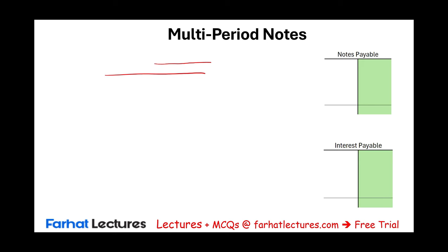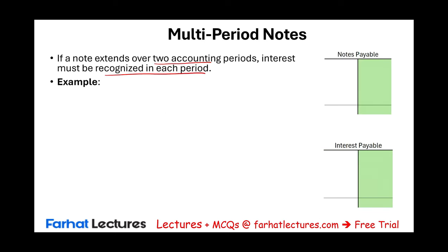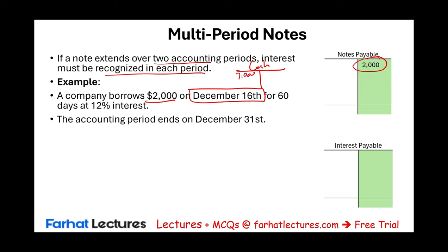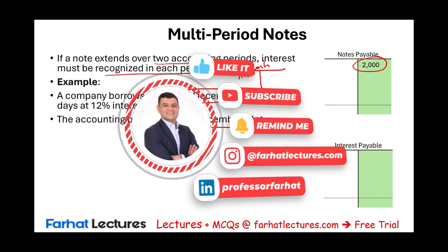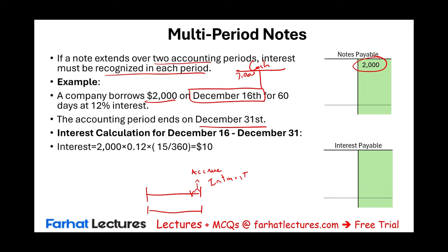If a note extends over two accounting periods, interest must be recognized in each period. For example: a company borrows $2,000 on December 16th for 60 days at 12%. We debit cash $2,000 and credit notes payable $2,000. The accounting period ends December 31st, so we accrue interest from December 16th to December 31st: $2,000 × 12% × (15/360) = $10.